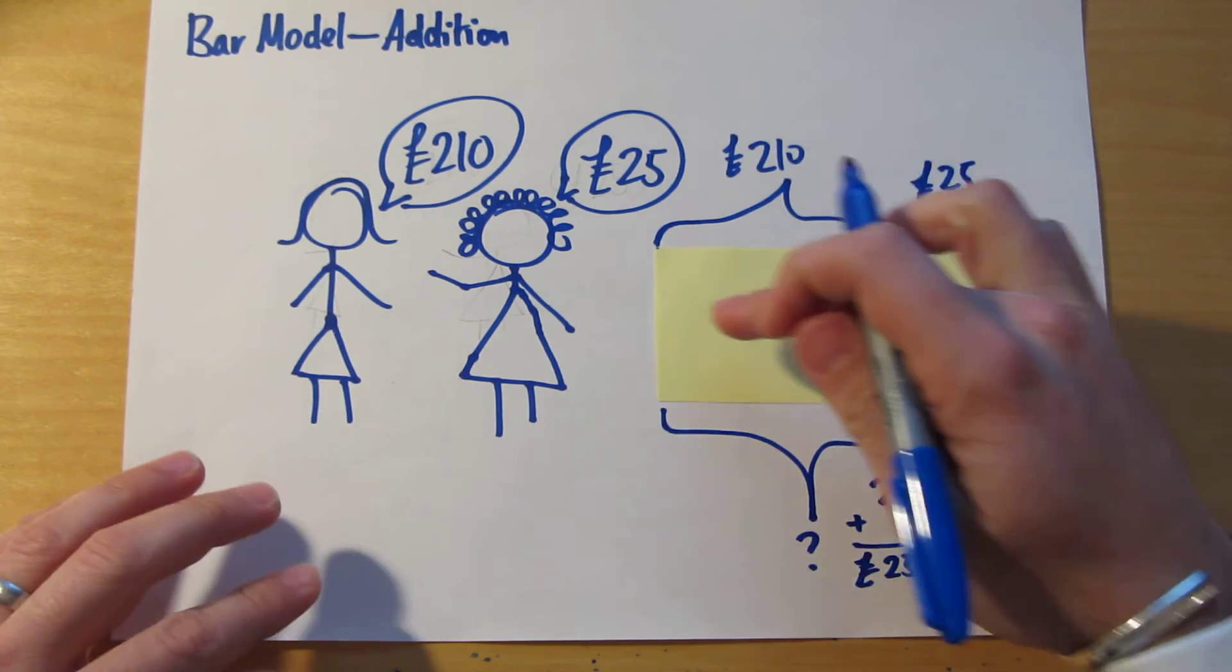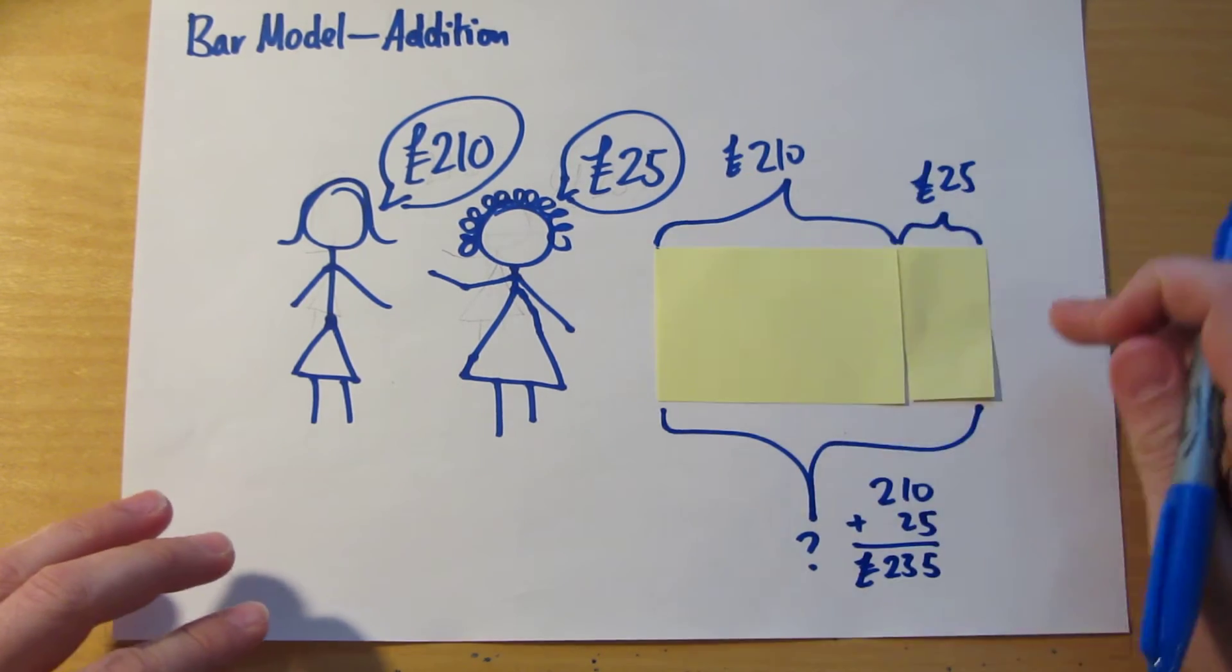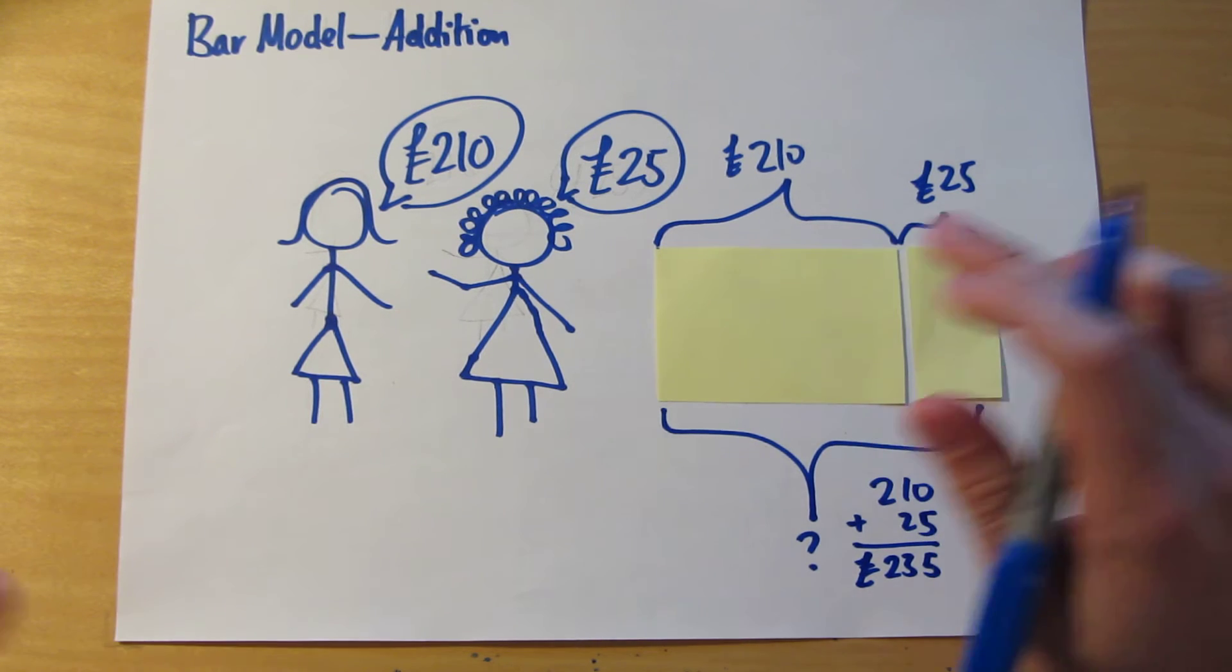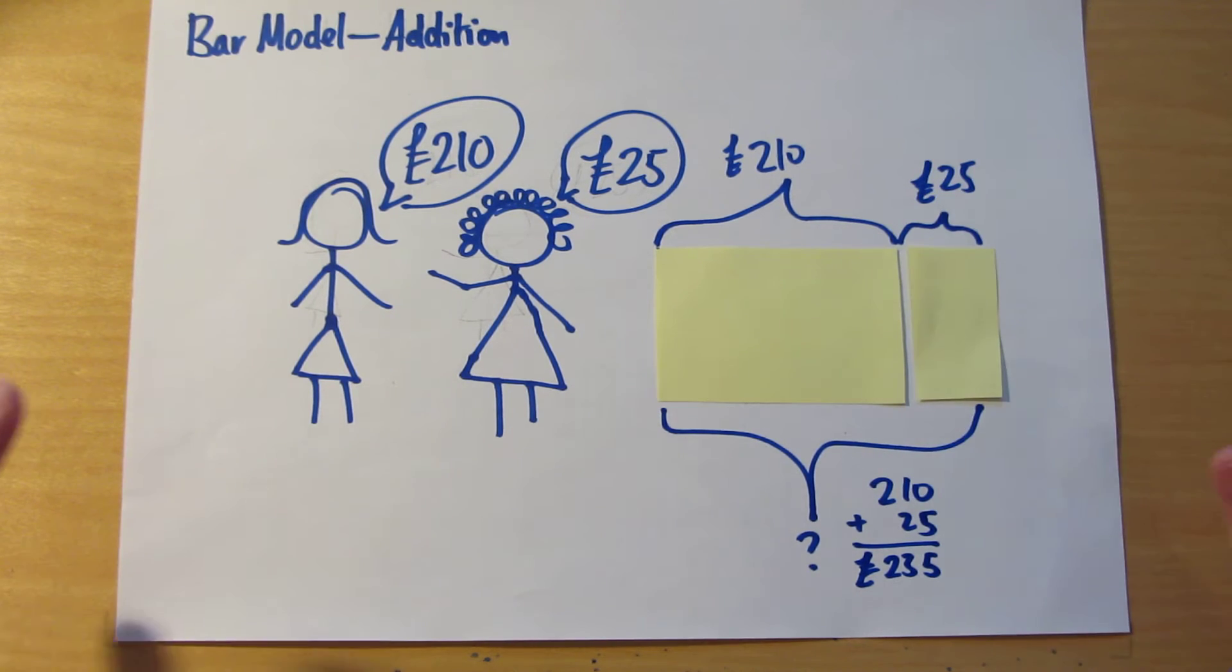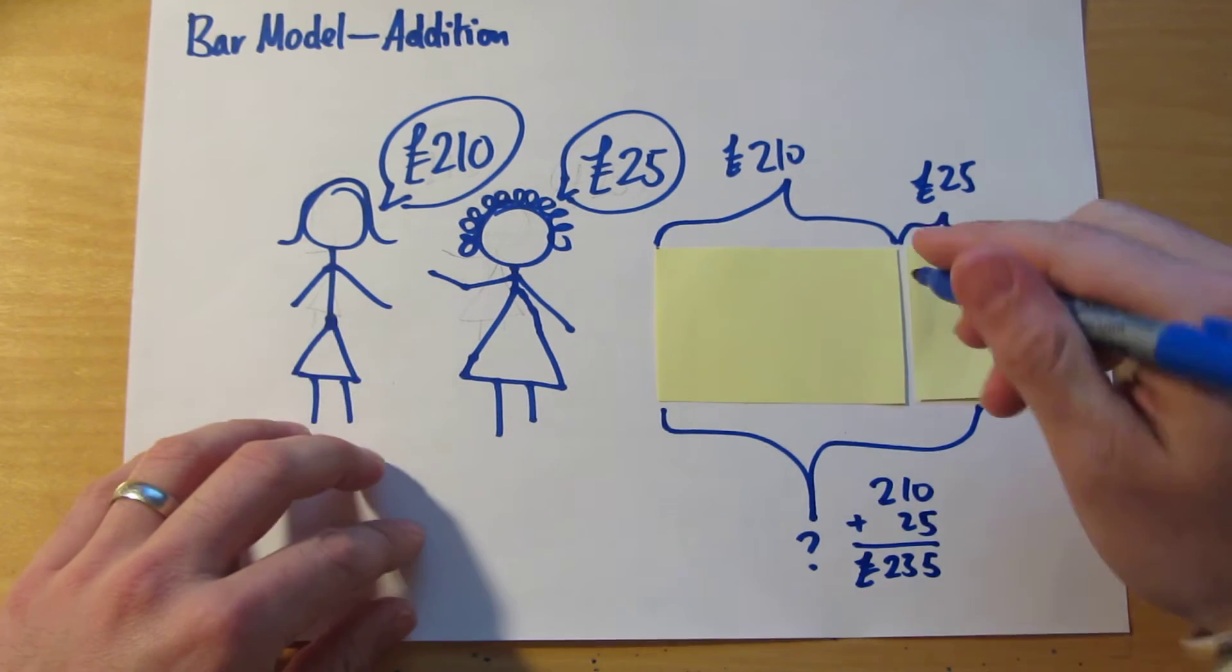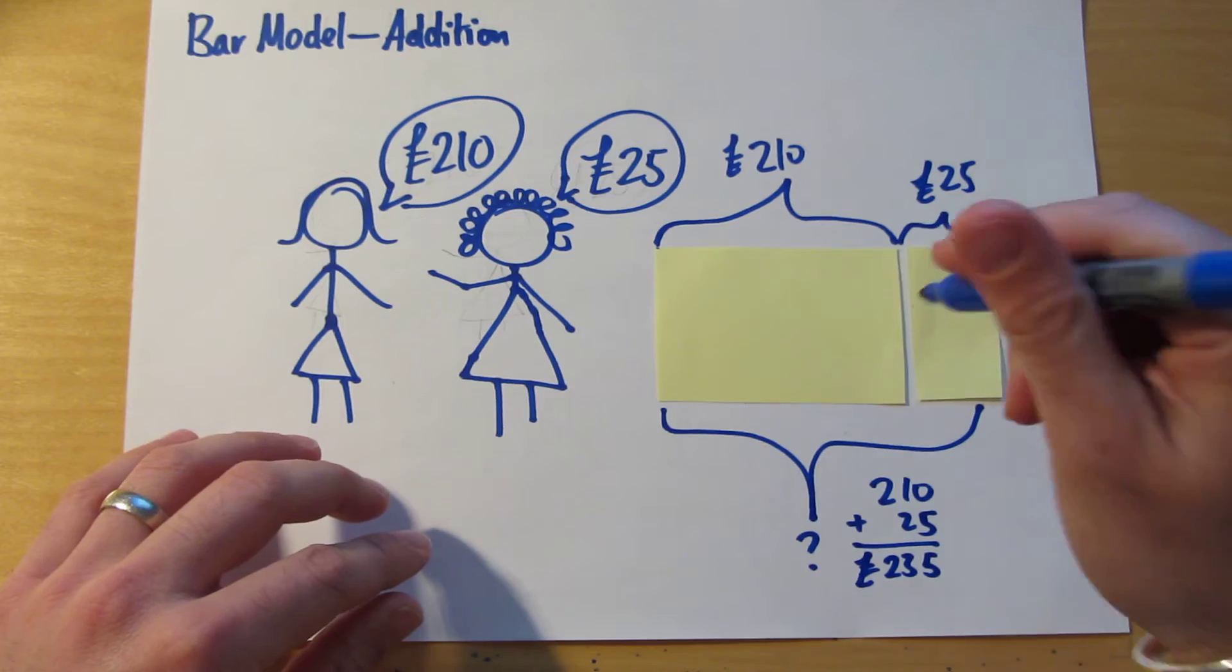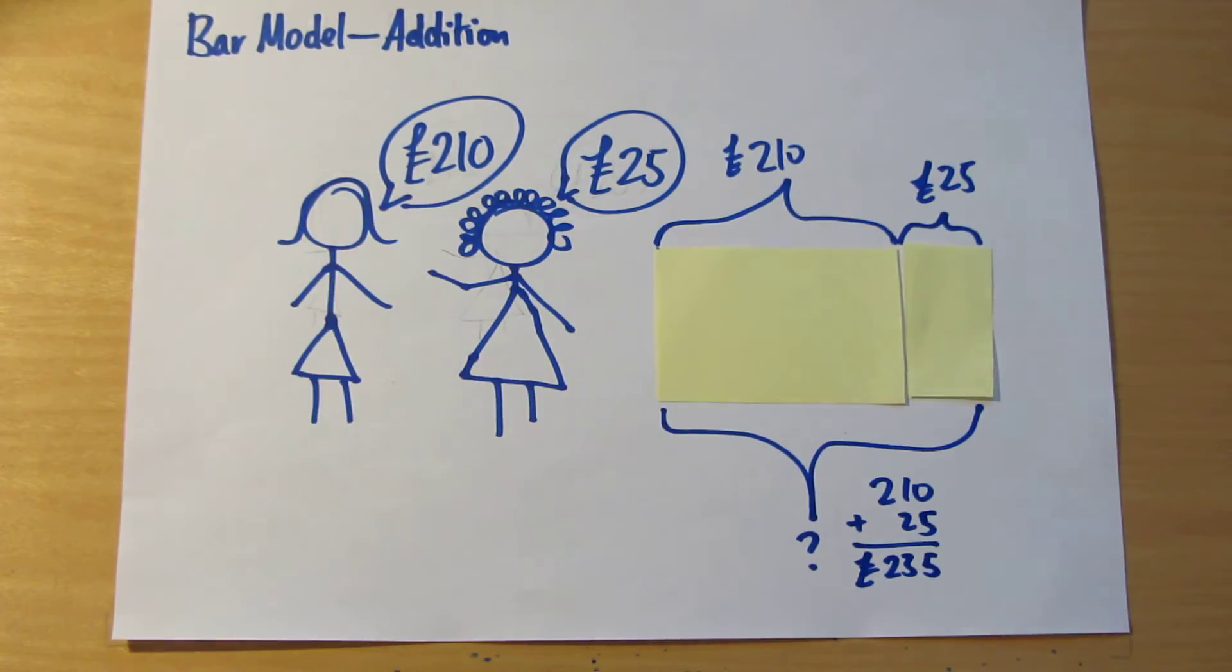The important thing is to be able to see that this bar model, these two rectangles here, represent an addition problem. The nature of this problem-solving strategy is that it allows us to visualize and to see the problem much more easily. We can see that this is an addition problem.